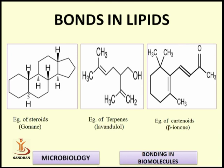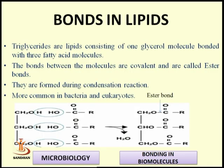You can observe the structures of steroids, terpenes, and carotenoids, noting the double bonds and hydrogen bonds present. Triglycerides consist of a glycerol molecule bonded with three fatty acid molecules. The bonds between the molecules in lipids are covalent and are called ester bonds. Ester bonds are formed during condensation reactions and are common in bacteria and eukaryotes.